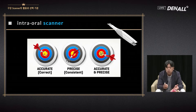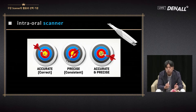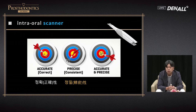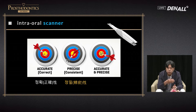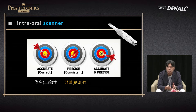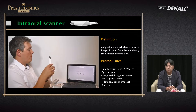In my clinic, we have both an intraoral scanner and a model scanner, but the model scanner is treated like a museum item that is not really used. The intraoral scanner is very accurate and precise, with excellent cross arch stability. Whether it's a full arch, cross arch, or scanning for fabricating a device, the intraoral scanner can cover all of those and can be used quite a lot clinically.